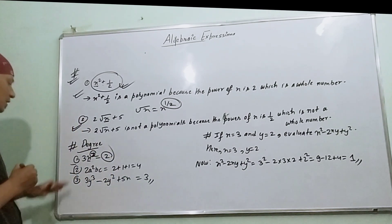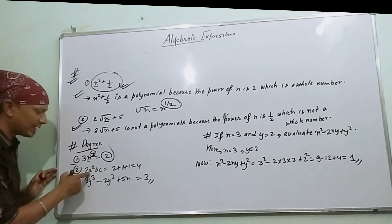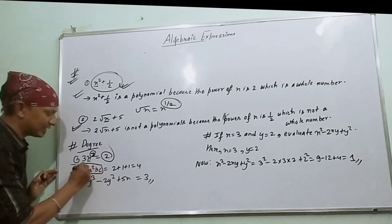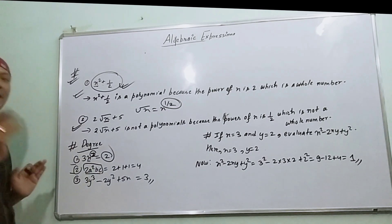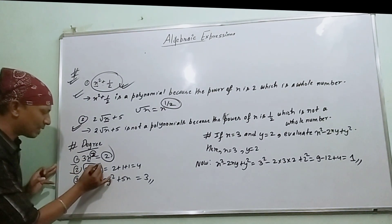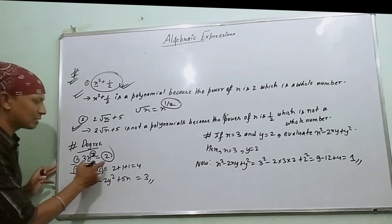What is the degree of 2a²bc? For variables, add the powers: a has power 2, b has power 1, c has power 1. So 2 + 1 + 1 = 4. The degree of 2a²bc is 4.